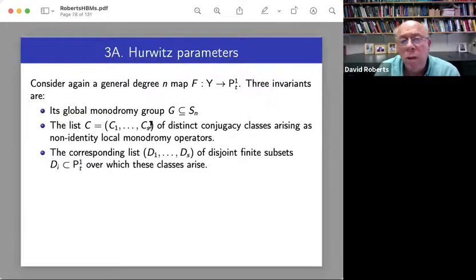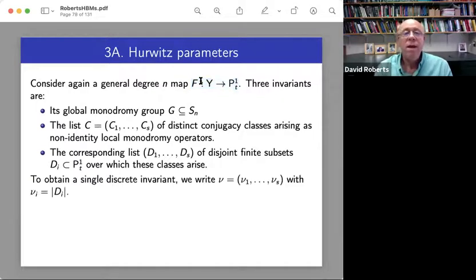And if you want something which doesn't depend on anything, it's a class, a conjugacy class. So that's what this is. And then, remember, we're starting with a map here. So what critical values correspond to what classes? So those will all be divisors.